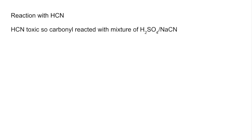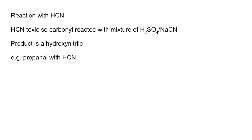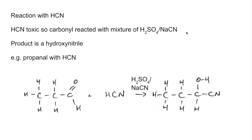Moving on to the reaction with HCN — hydrogen cyanide. HCN is a very toxic substance, so in practice the carbonyl compound is reacted with a mixture of sulfuric acid and a source of cyanide ion, such as sodium cyanide. The product is called a hydroxynitrile. Using propanal with HCN as an example, the H from the HCN bonds to the oxygen of the carbonyl group and the CN joins to the carbon — giving this hydroxynitrile.